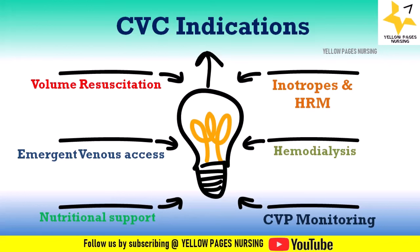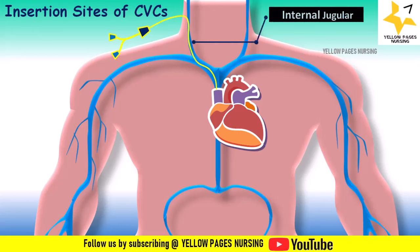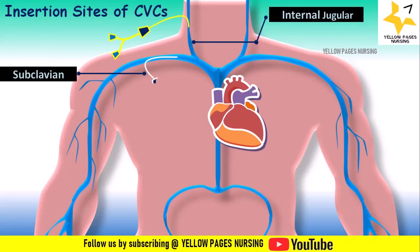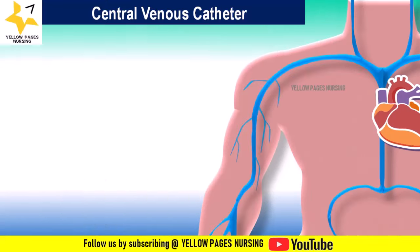The insertion sites of central venous catheters include the internal jugular vein, subclavian vein, and femoral vein. Care of central venous catheters also includes the following: assessment, scrub the hub, transparent dressing, use of closed system extension, and flushing and locking.